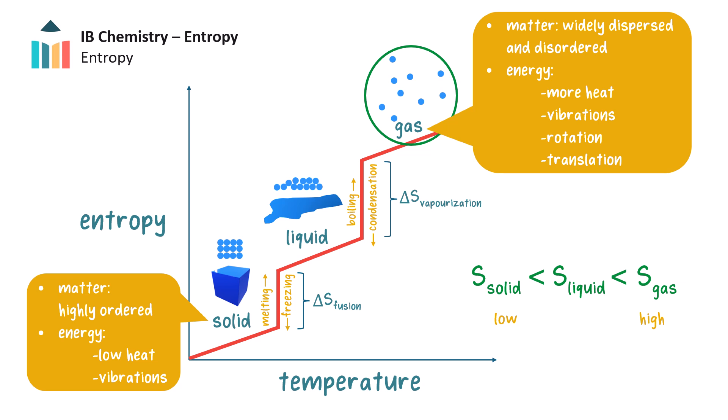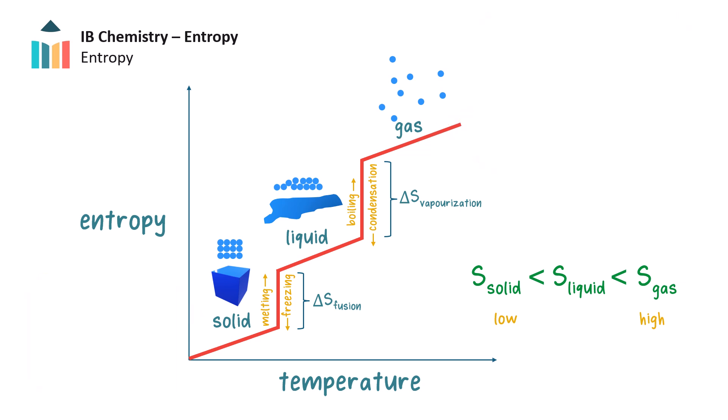Gases are the most disordered and so have the highest entropy. The higher the temperature of a substance, the higher the entropy.